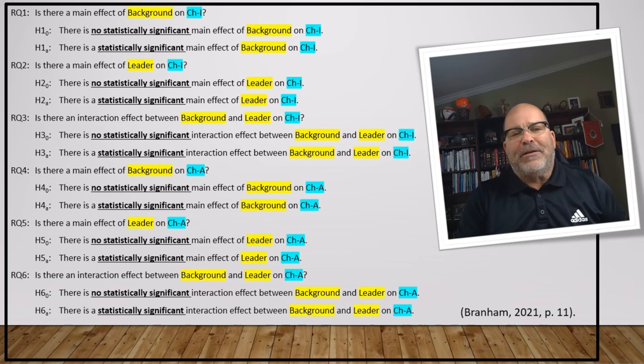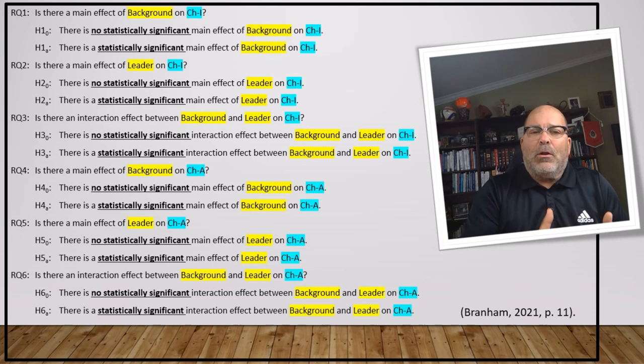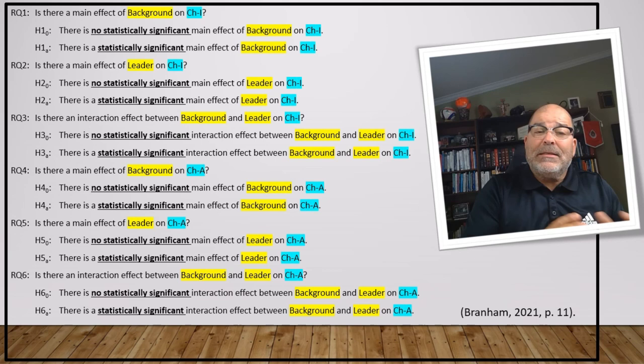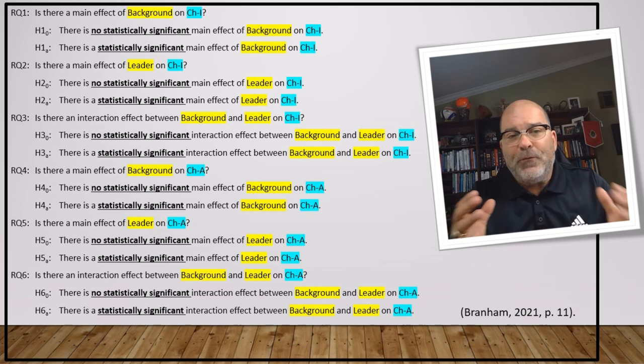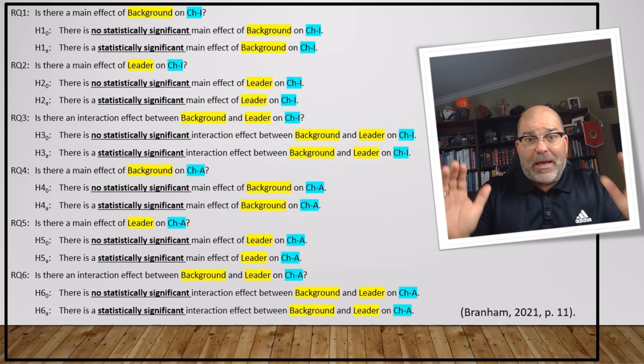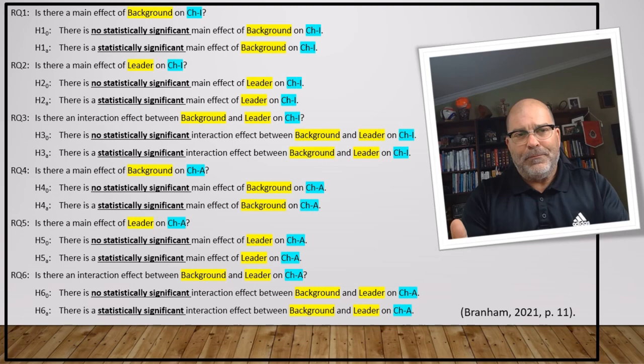Applying this practically from our example: is there a main effect of background on CHI — which represents charisma, condensed here for efficiency? The null hypothesis states there is no statistically significant main effect of background on CHI, and the alternative states there is a statistically significant main effect of background on CHI. Hopefully at this point you're saying, I get it — we align by using the same words and variables in the same pattern over and over again. The light bulb should be on: this isn't that complicated.